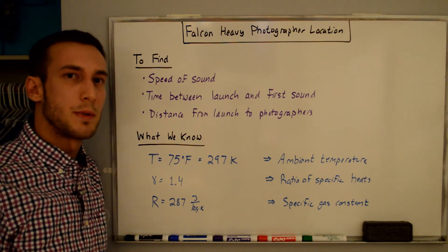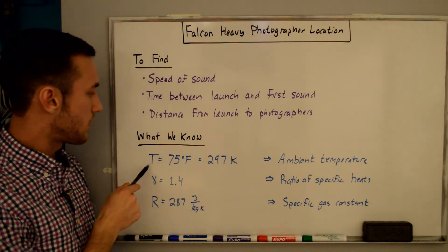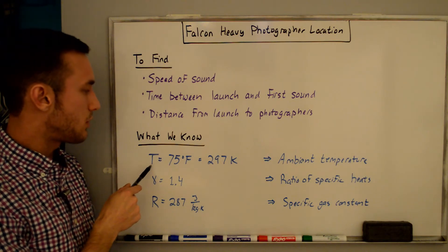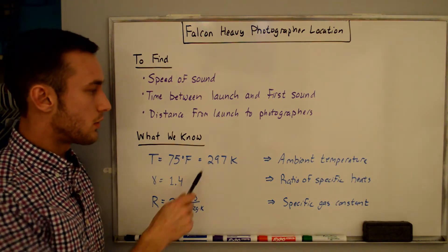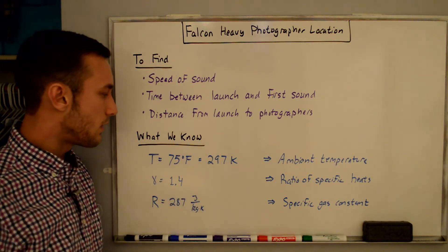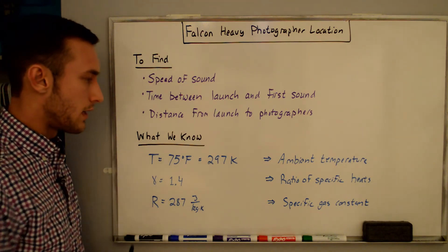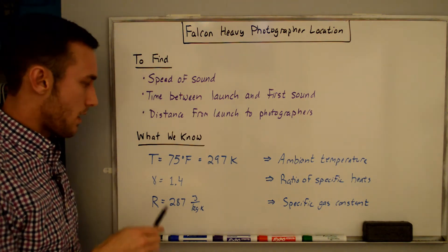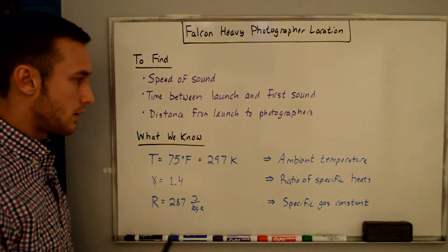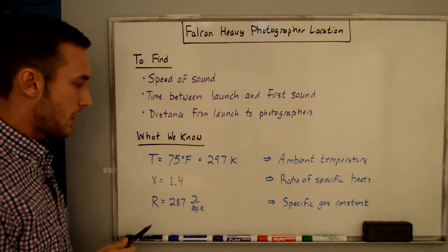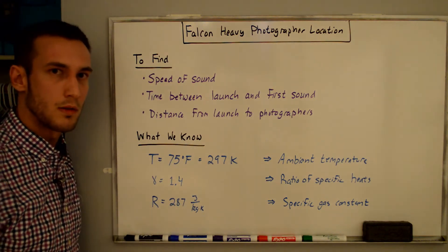First thing to do is solve for the speed of sound, and these are the three variables we need to know. The first is the ambient temperature at the launch, which was 75 degrees Fahrenheit or 297 Kelvin. This is the ratio of specific heats, 1.4 — that's a normal value. And then the specific gas constant R is 287 joules per kilogram Kelvin.